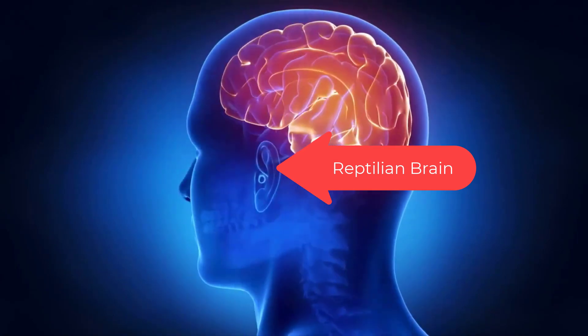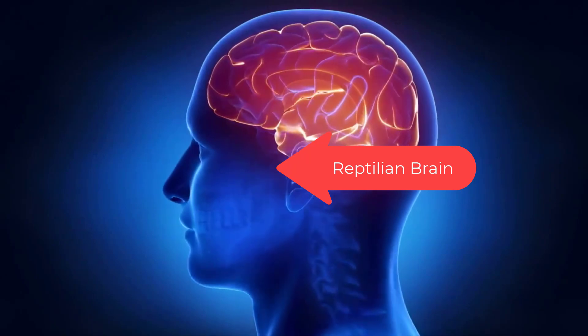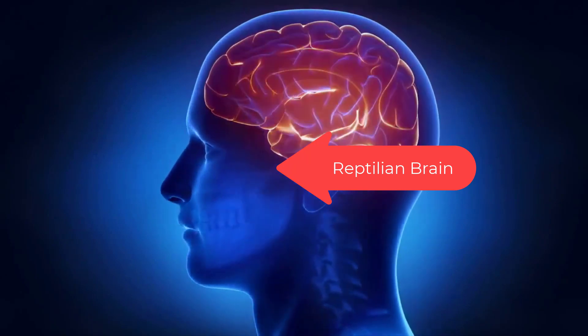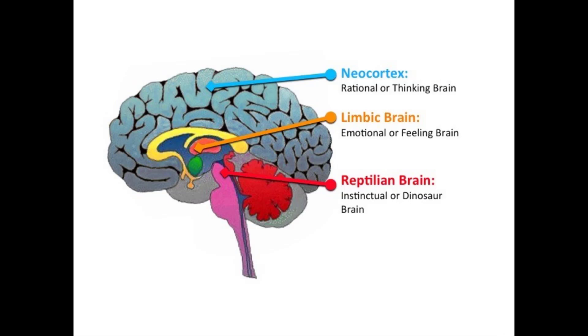The old brain — the reptilian brain — it decides. It can take into account input from the other brains, but it can also decide faster than the blink of an eye, then use the other brains to justify the decision. The reptilian brain is visual and hardwired into the brain stem.